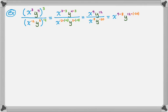So 9 minus 8, and y to the 12 minus negative 20. Overall I'm getting x to the first times y to the 32nd. The x to the first — it's optional to write the 1, and in fact no one really does it. I just did it because I'm showing all my work. So really you would write that as x times y to the 32nd. Let's do one more example.